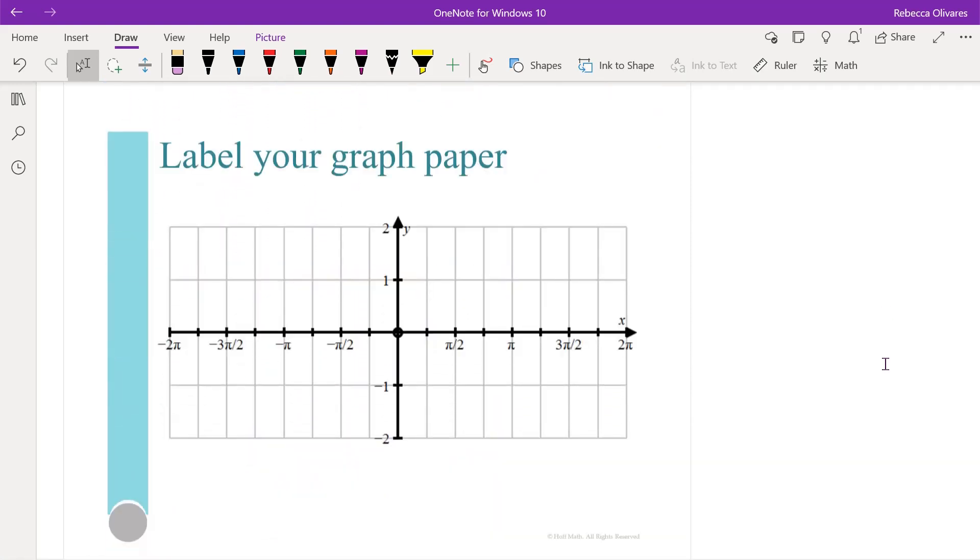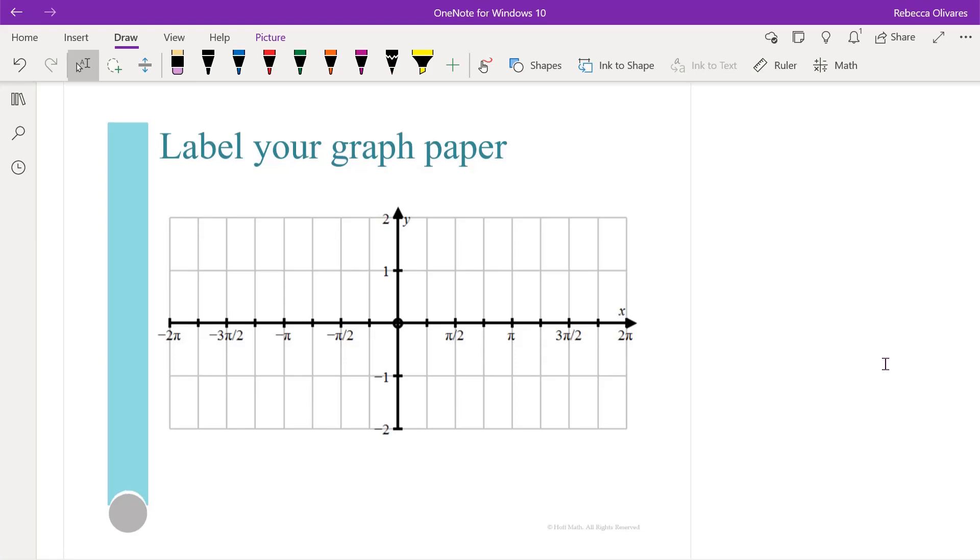I give the students blank trig graph paper, and I'll have a link to that as well in the video description. I'll have the students take the time to label their graph paper. The reason I give the graph paper unlabeled is because I want them to know that sometimes they need to change their scale. Maybe in this one every grid line is π/4, but sometimes you need to go by multiples of π.